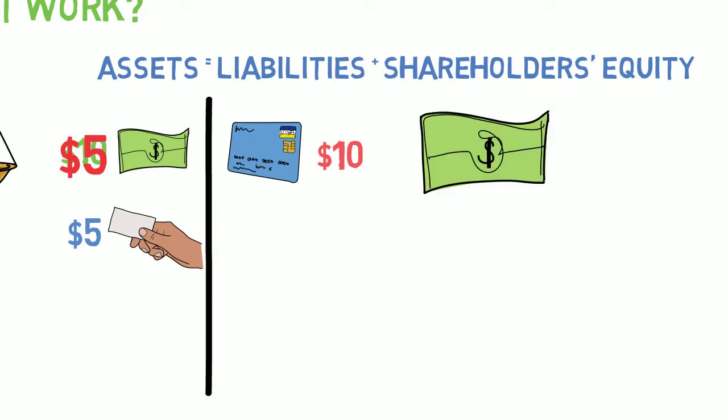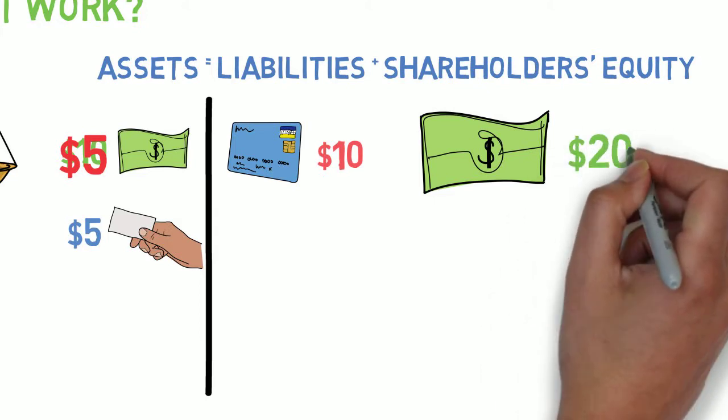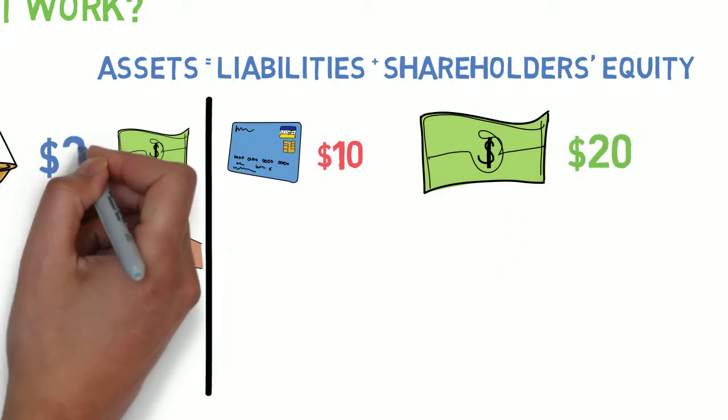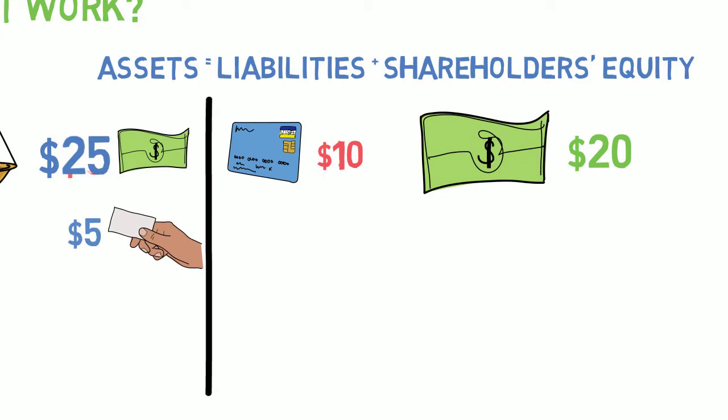But then let's say that we got a $20 profit from our operating of the business. We'd also have to add that to the asset side by $20 to make it balance out.